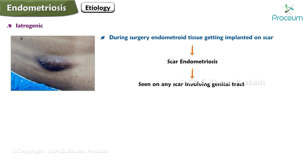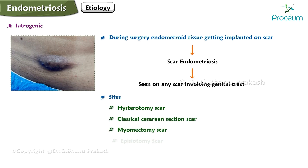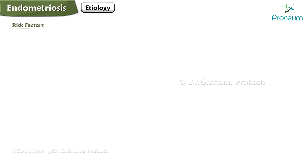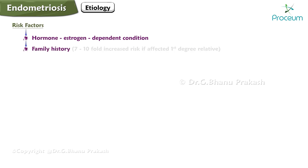Iatrogenic endometriosis occurs during surgery when endometrioid tissue gets implanted on a scar, causing scar endometriosis. It can be seen on any scar involving the genital tract, and is more commonly seen at hysterotomy scars, classical caesarean section scars, myomectomy scars, and episiotomy scars.